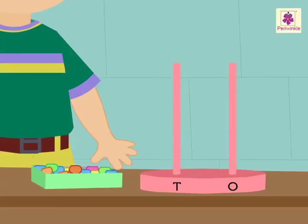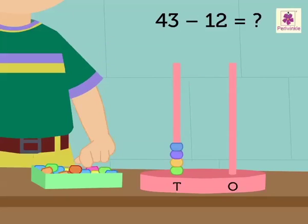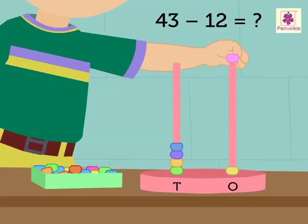Now, let us solve one more example. Subtract twelve from forty-three on the abacus. To find the difference, firstly put four beads in the tens rod and three beads in the ones rod.